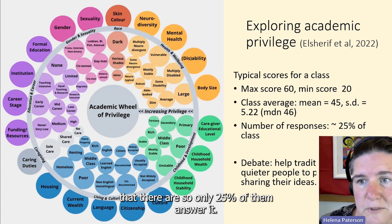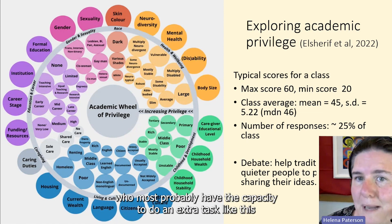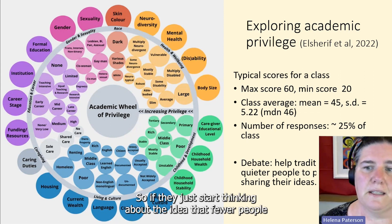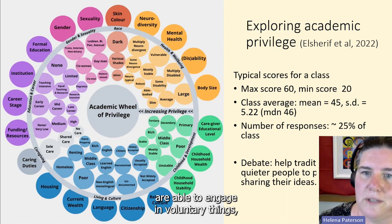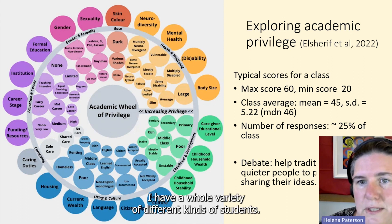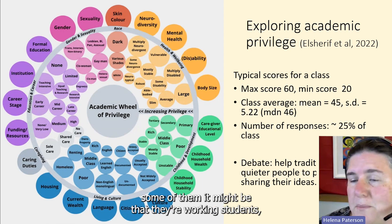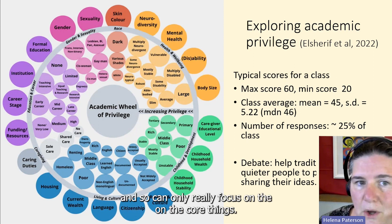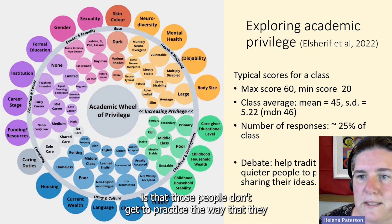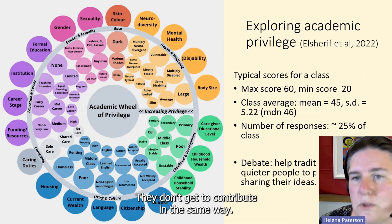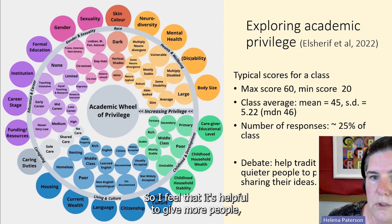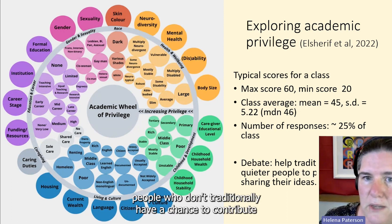That score in the upper end of privilege means that the 25% who answered were most probably those who had the capacity to do an extra voluntary task. If students start thinking about how fewer people engage in voluntary activities, they may be missing out on opportunities — whether because they're shy, working students, or have caring responsibilities. Those people don't get to practice sharing their ideas or contribute in the same way.